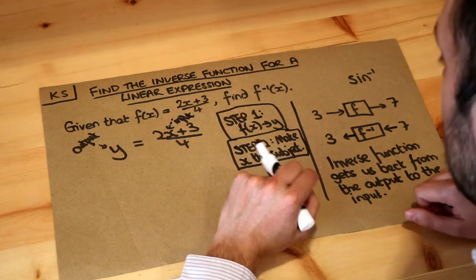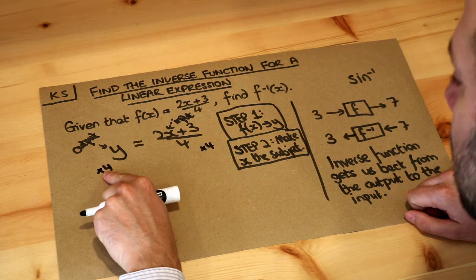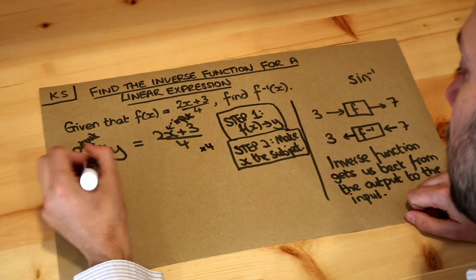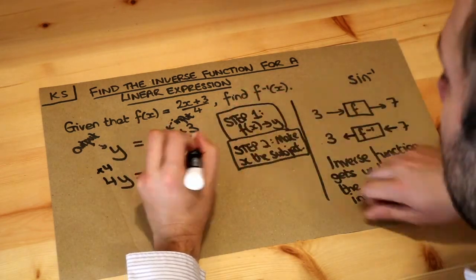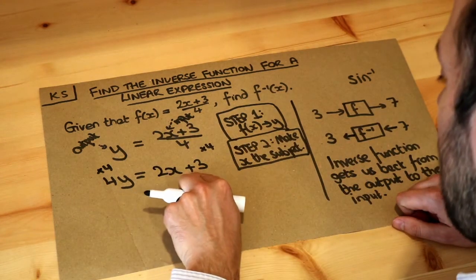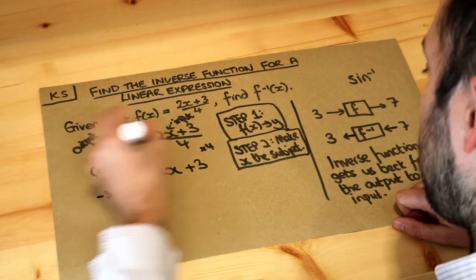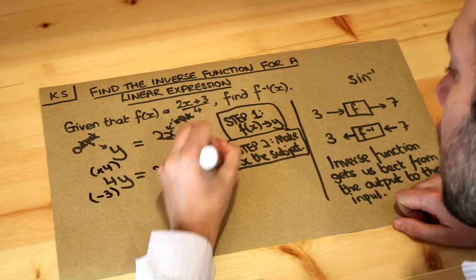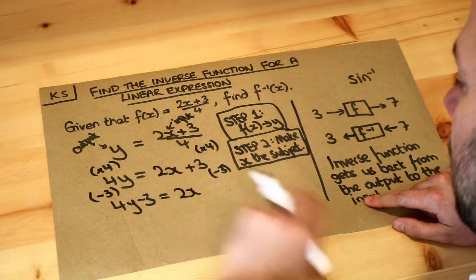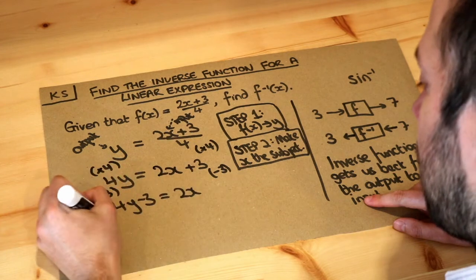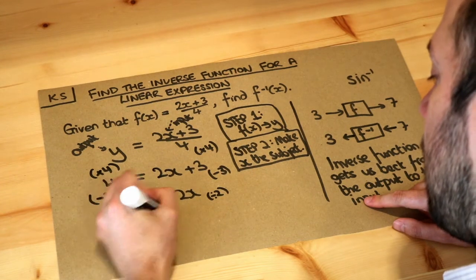We undo the last thing that was done to it — we undo the divide by 4 by multiplying both sides of the equation by 4. Remember, whatever you do to one side of the equation, you have to do the same to the other. So y times 4 is 4y, and multiplying by 4 gets rid of the over 4, leaving 2x plus 3. Now x has been multiplied by 2, then we're adding 3, so we undo the plus 3 by subtracting 3 from each side. That becomes 4y minus 3, and that just becomes 2x. Then finally, x has been multiplied by 2, so we divide both sides by 2, and we get 4y minus 3 over 2 equals x.